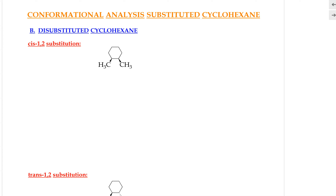Hi, in this video we'll do some of the conformational analysis of disubstituted cyclohexanes. When the cyclohexane is disubstituted, it will have many different isomers that are different molecules, depending on first the position of the substituent group, and second whether they are cis or trans with respect to each other. Here in this lecture we'll take a look at a few of those.